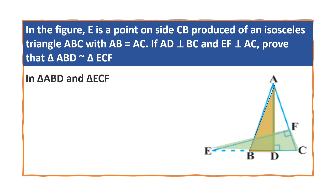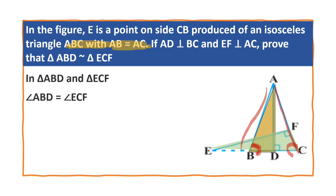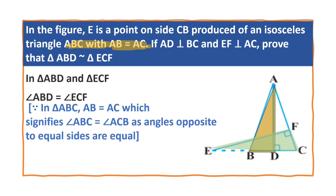In triangle ABD and ECF, we have angle ABD and angle ECF are equal. Why? We are given that triangle ABC is an isosceles triangle with AB equal to AC. Angles opposite to equal sides are always equal. Because in triangle ABC, AB is equal to AC, which signifies angle ABC is equal to angle ACB, as angles opposite to equal sides are always equal.